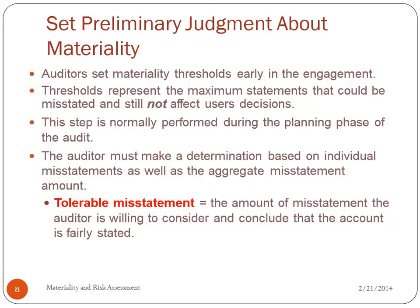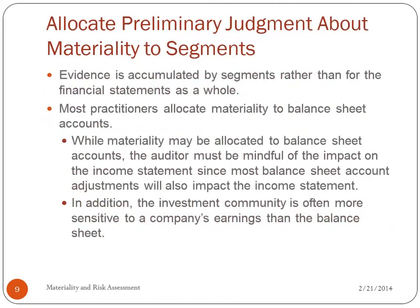The tolerable misstatement is the amount of misstatement the auditor is willing to accept and still conclude that the account is fairly stated. Evidence is accumulated by segments rather than for the whole financial statements as a whole. Most practitioners allocate materiality to balance sheet accounts initially. When materiality is allocated to balance sheet accounts, the auditor must be mindful of the impact on the income statement and cash flow, since most balance sheet adjustments also impact the income statement.